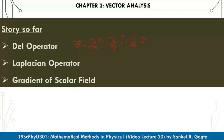Then we defined the Laplacian operator, which is the del-squared operator — a second-order differential scalar operator obtained by taking the dot product of the del operator with itself. It equals double differentiation with respect to x plus double differentiation with respect to y plus double differentiation with respect to z. Then we defined the gradient of a scalar field, which is the operation of the del operator onto any scalar field.